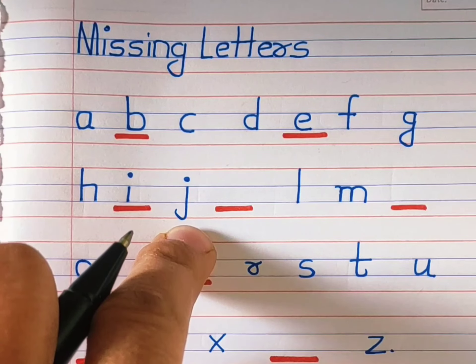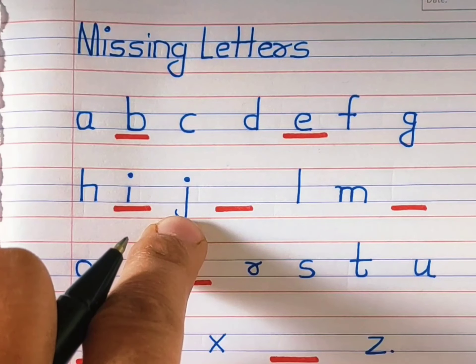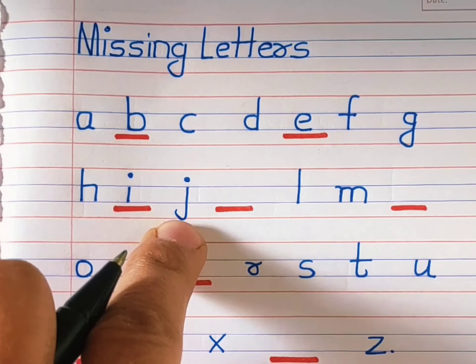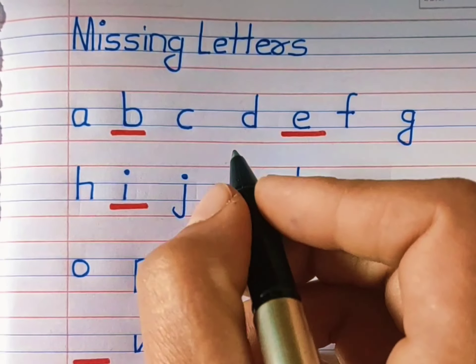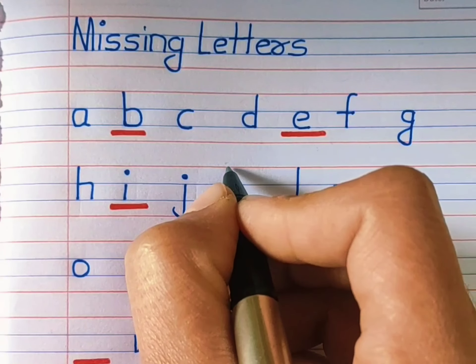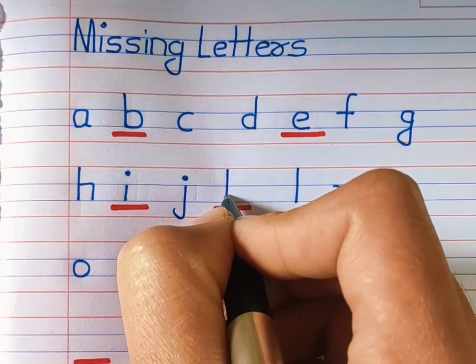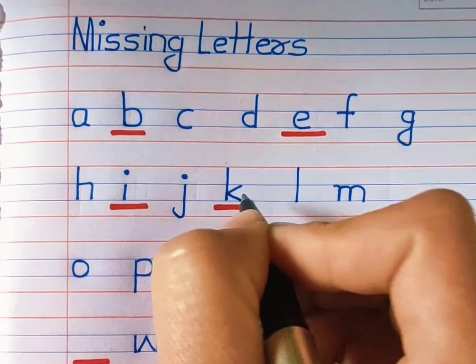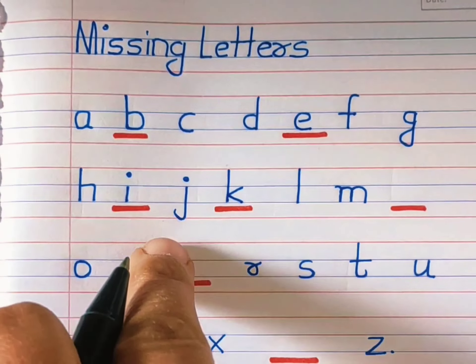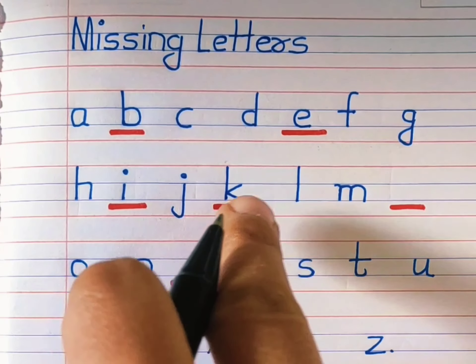Which alphabet is this? J. What comes after J and before L? Yes, small K. J, K, L.